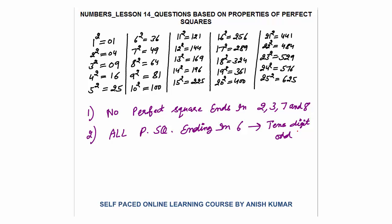Now, a few more important observations about perfect squares. First: no perfect square ends in 2, 3, 7, or 8. Since the last two digits repeat after 25 squared, the last digit of all perfect squares must be one of those found in squares of 1 to 25 — and none of those end in 2, 3, 7, or 8.